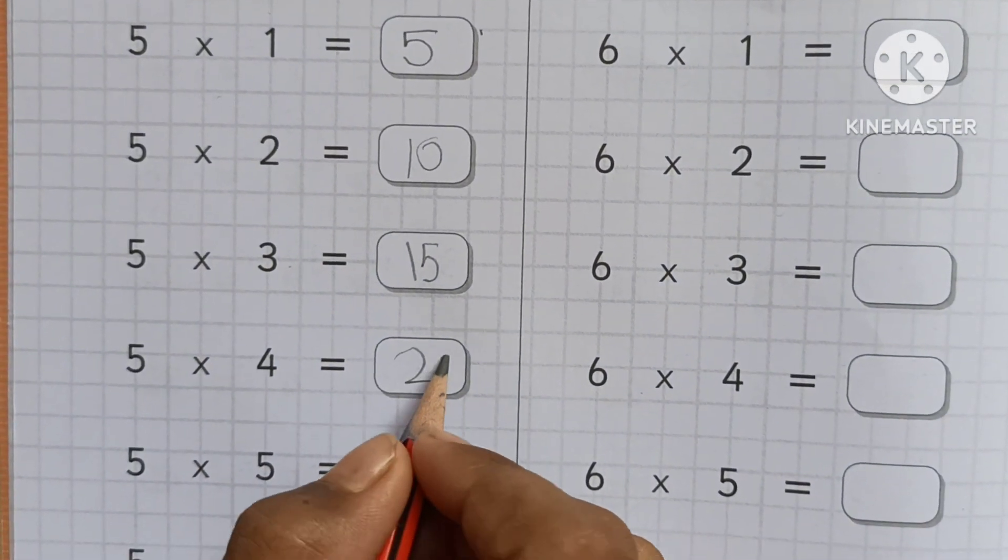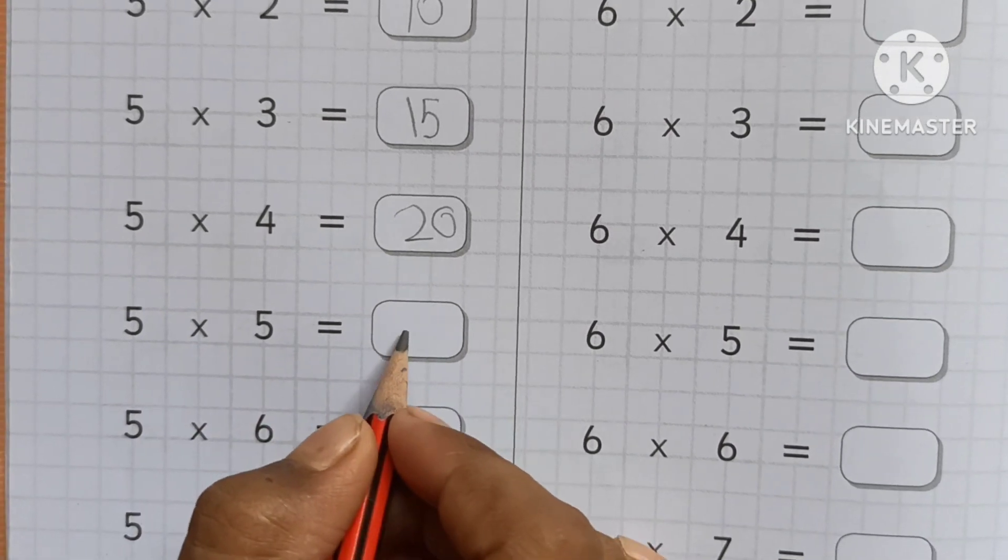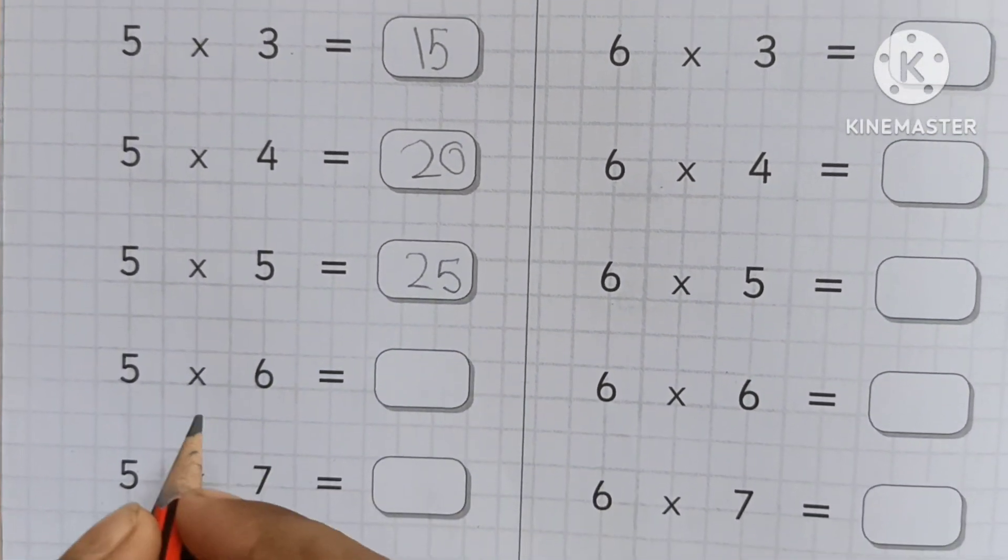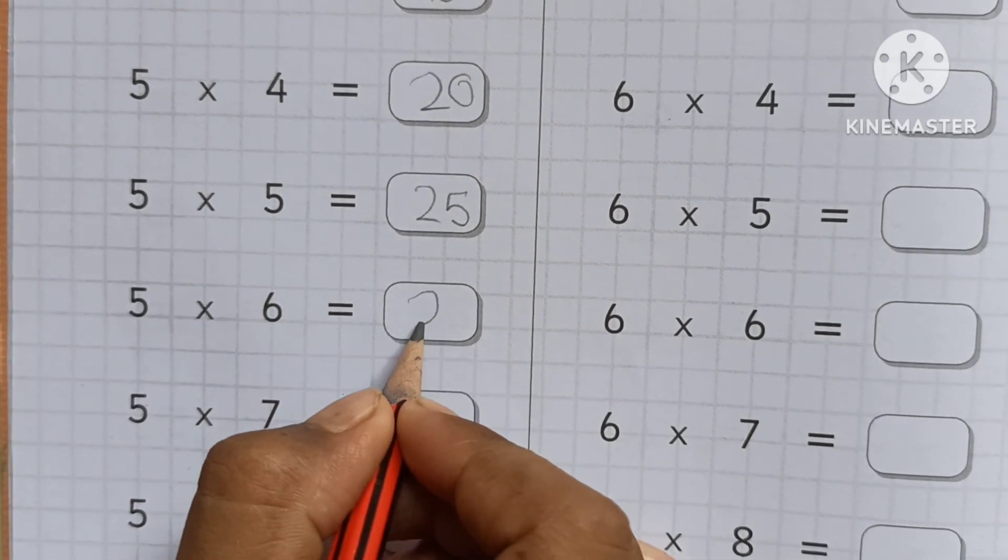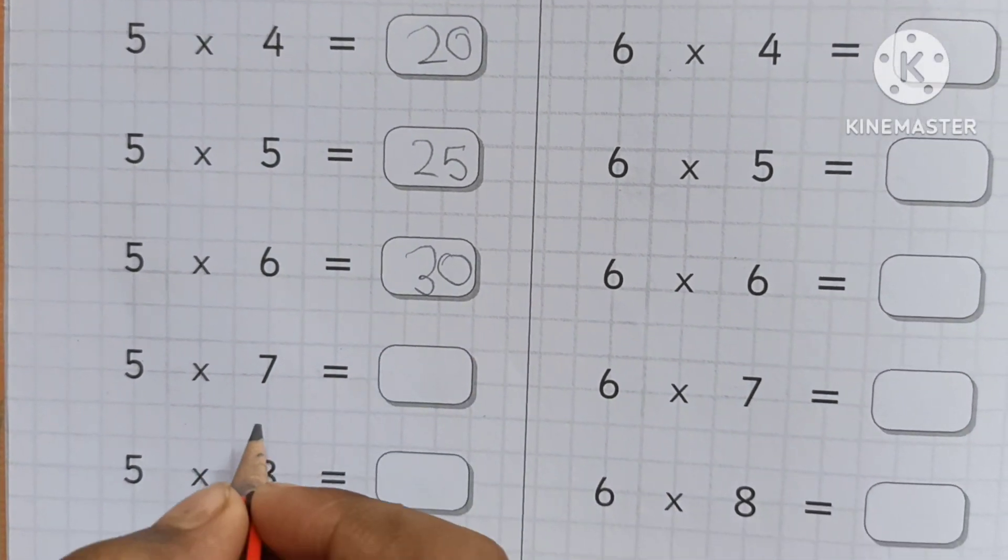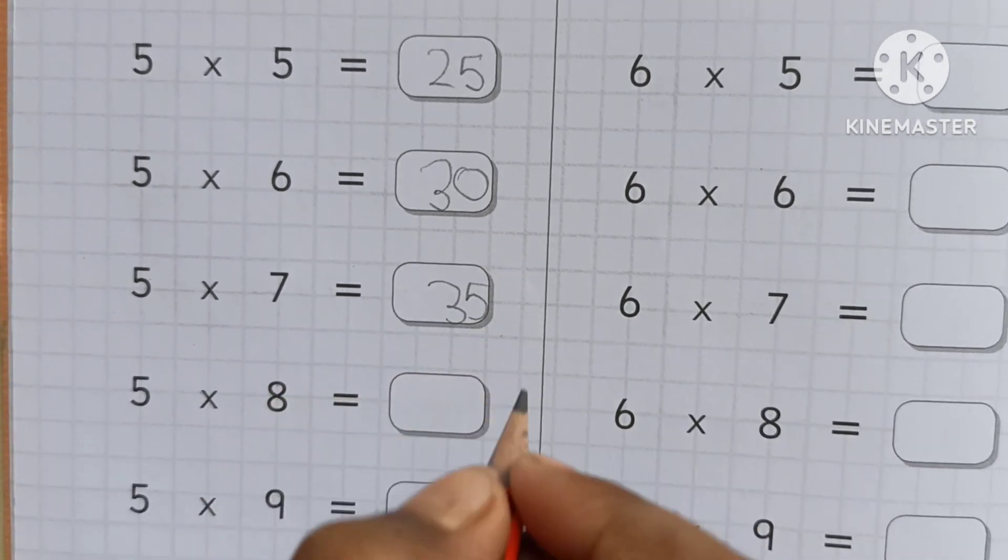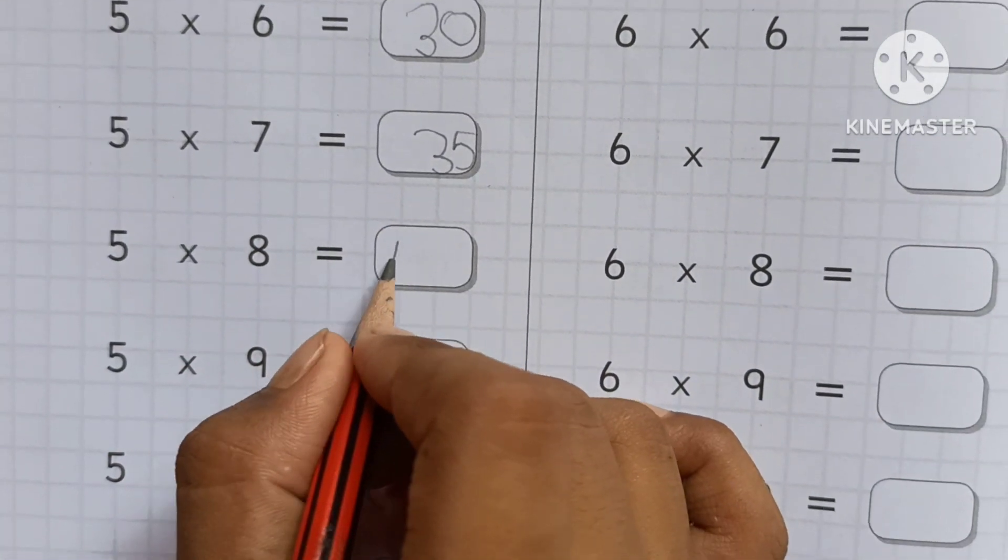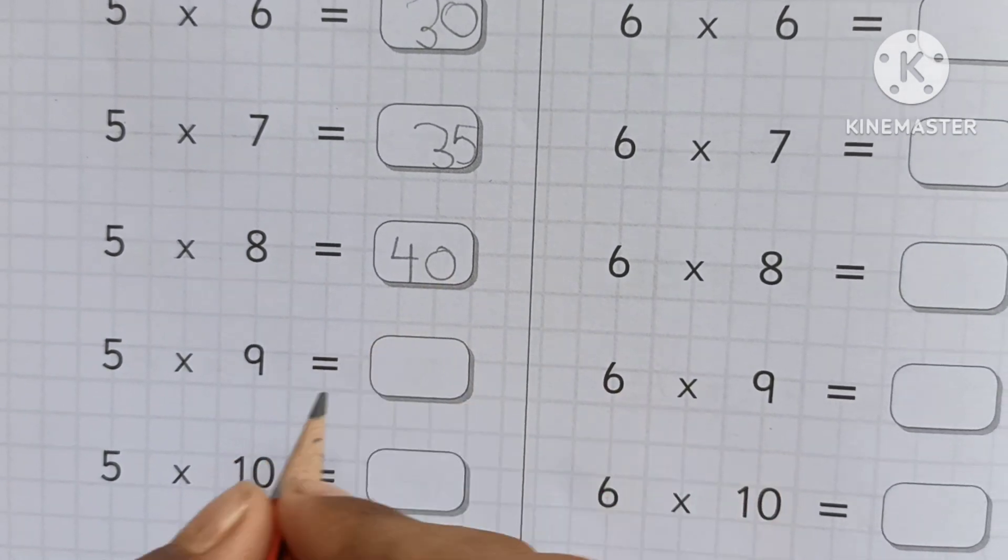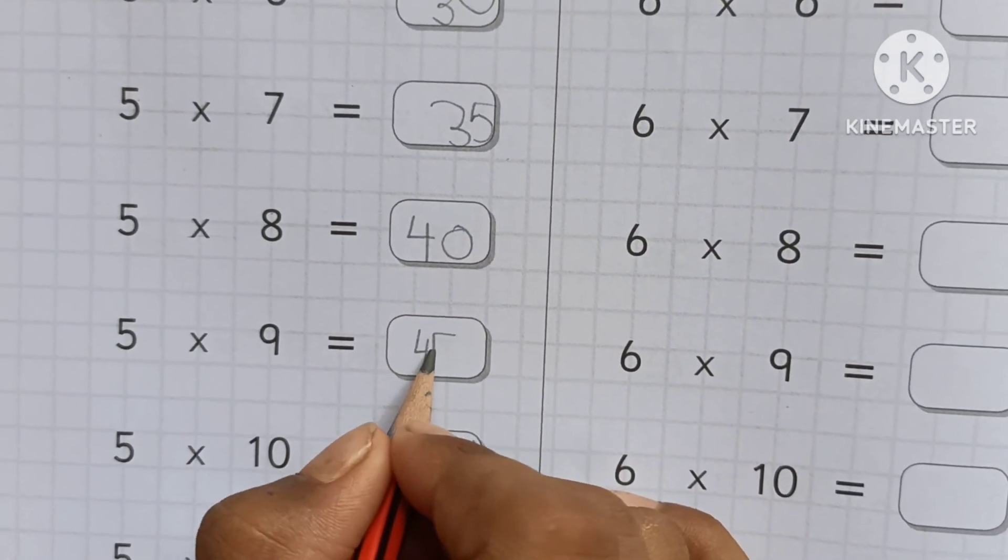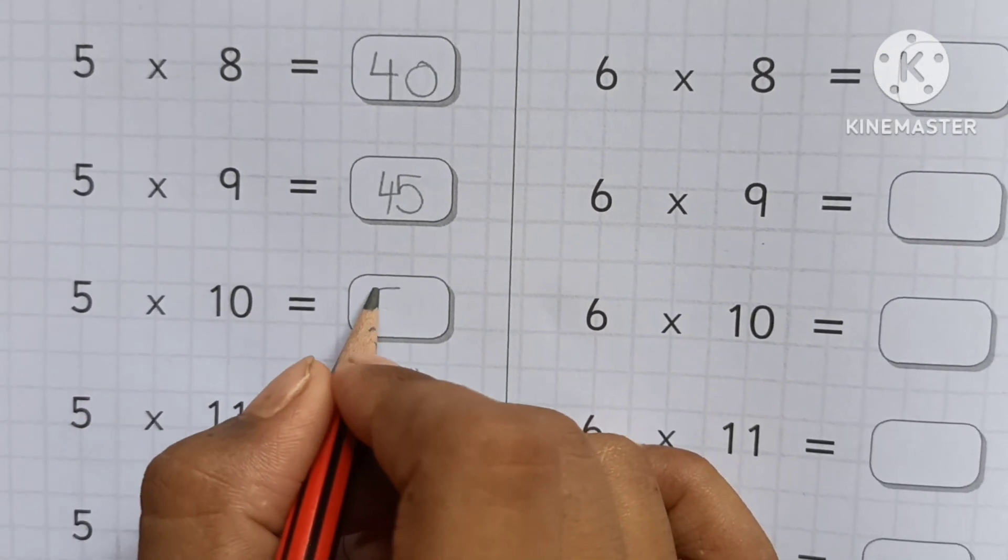Five fives are twenty-five. Five sixes are thirty. Five sevens are thirty-five. Five eights are forty. Five nines are forty-five.